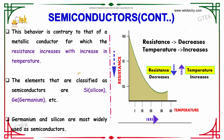The elements classified as semiconductors — the typical examples are silicon and germanium. Germanium and silicon are the most widely used semiconductors.